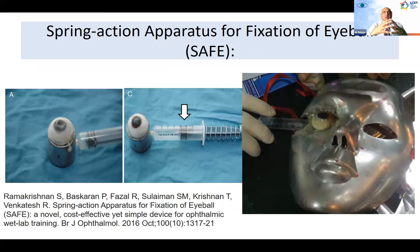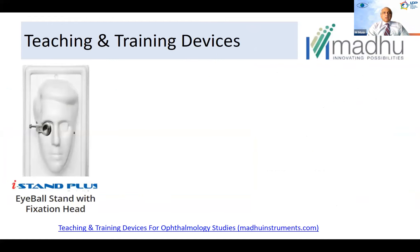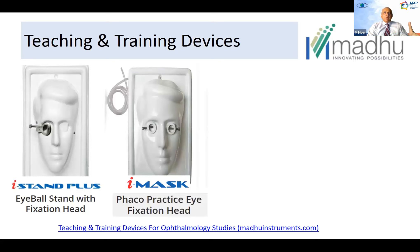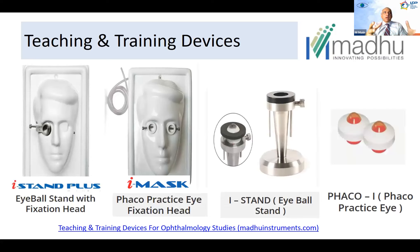There is also a spring action apparatus for fixation of the eyeball, useful when the eye is moving and you cannot practice stable surgery. Another option is the film roll box mount — a cylindrical box mounted on a rectangular thermocord that presents the surgical field. In India, there is the eye stand plus, with a fixation head, eye mask, FACO practice head, and a ball stand. These plastic devices, along with FACO practice eyes, are available in different parts of the world including the US and UK.